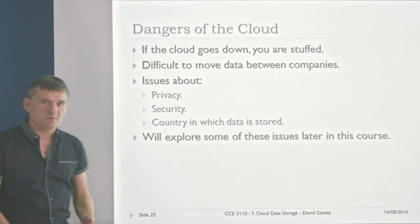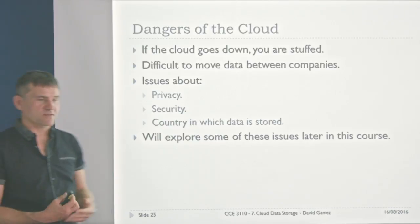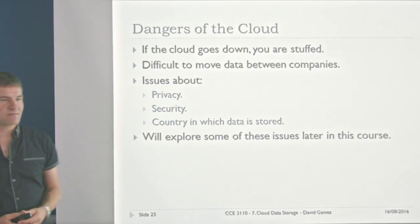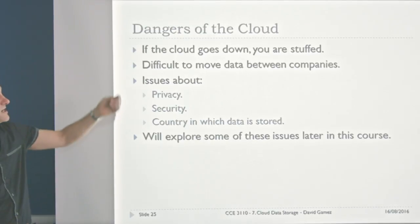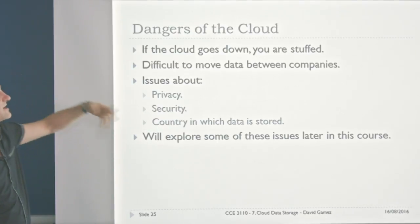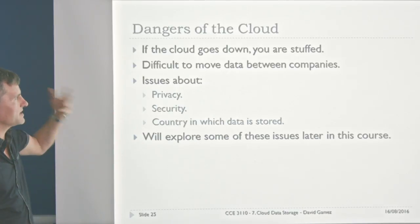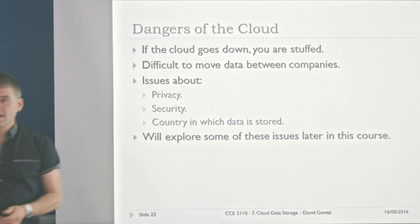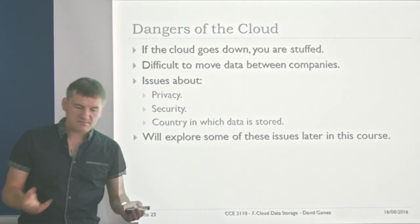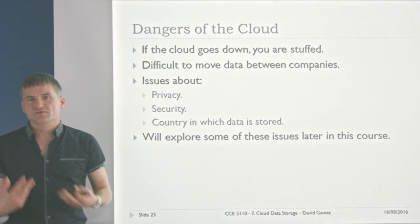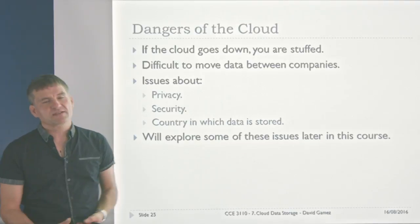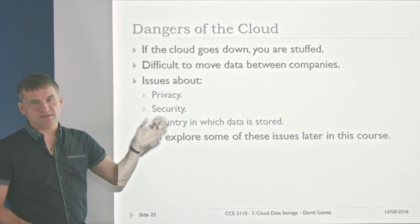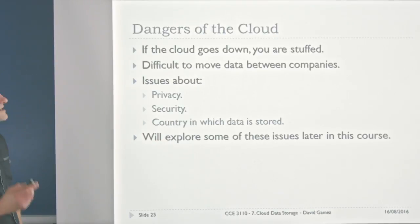What are the limitations of the cloud? If the cloud goes down and you completely depend on it for storing and retrieving your data — say there's a fire in the data farm in Ireland — it could take a while to get your data back. You're relying on network connections being up; if the ISP goes down, you're also stuck. It can be difficult to move data between companies — if Amazon goes bust, retrieving your data could be very difficult. There are also issues about privacy, security, and the country in which data is stored.